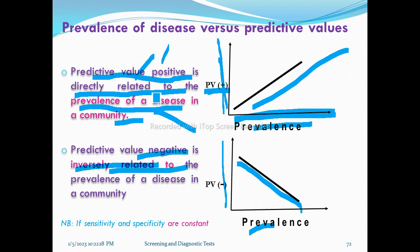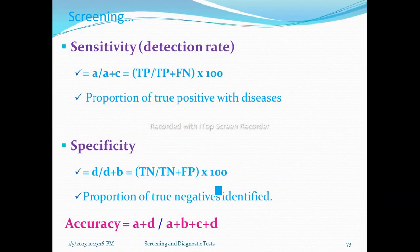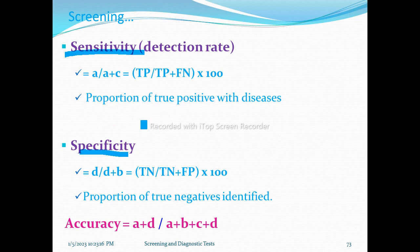Assuming that sensitivity and specificity are constant, positive predictive value and negative predictive value will vary with the prevalence of the disease.